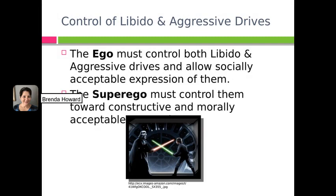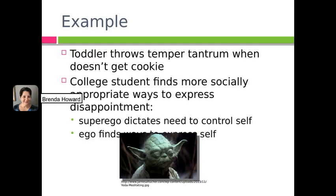Freud says there's a need to control our energies — our libido and aggressive drives. It's the ego that works to control both, creating socially acceptable ways of expressing libido and aggression. The superego is always looking at morality, keeping us within the bounds of socially constructed moral norms. For example, a toddler who doesn't get a cookie might throw a temper tantrum — that's aggression. A college student will find more socially appropriate ways of expressing disappointment, guided by the superego and mediated by the ego.